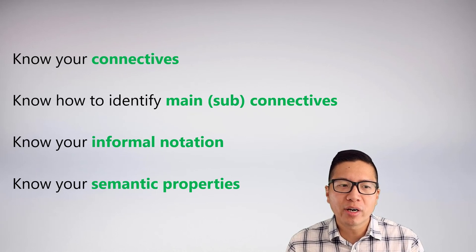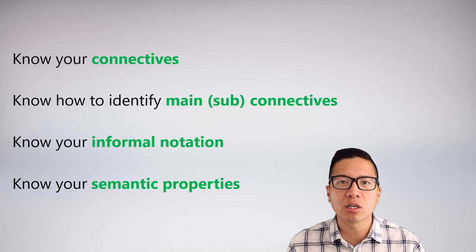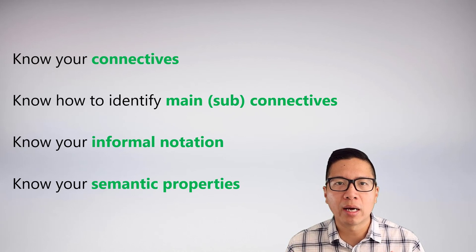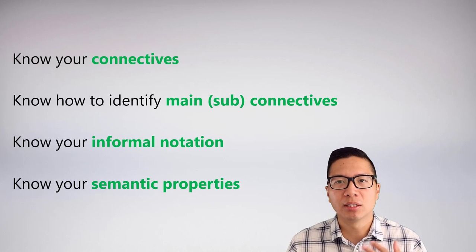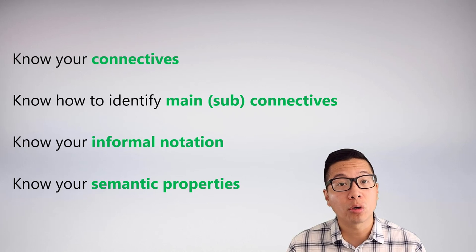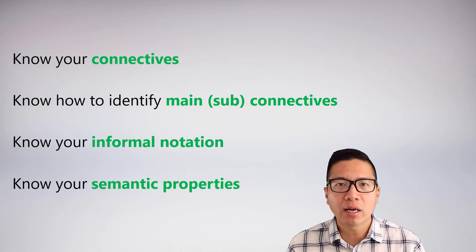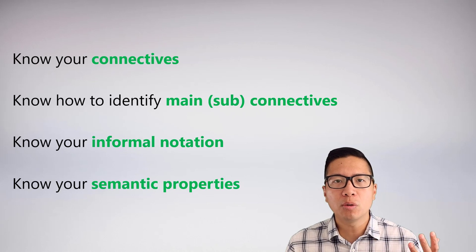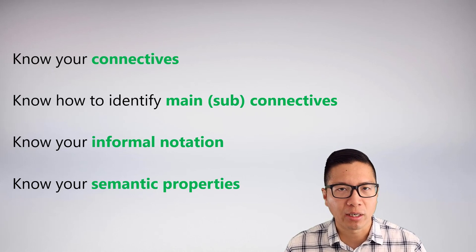Shortened truth tables are nice — they're pretty fun. They just require you to know the truth tables of your connectives. There's nothing to memorize about how conjunction and disjunction work; you really want to rely on your natural language intuition. The most important skill is being able to identify main connectives, sub-main connectives, and so on. You also really need to know informal notation, since that's how questions will be written. Finally, you need to know your semantic properties so you know what truth values to set your statements to. In this video we only practiced a couple of semantic properties, but we'll look at others in demonstration examples.